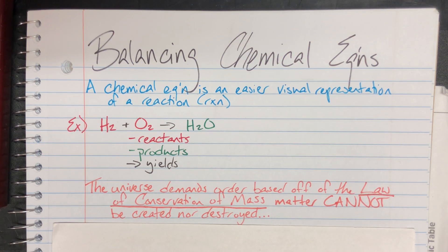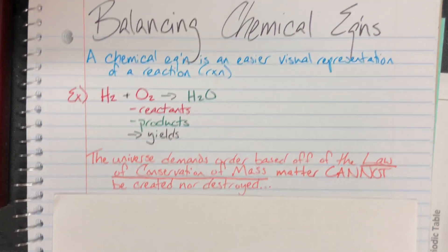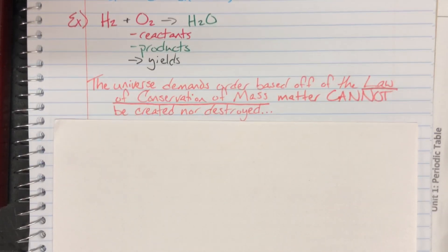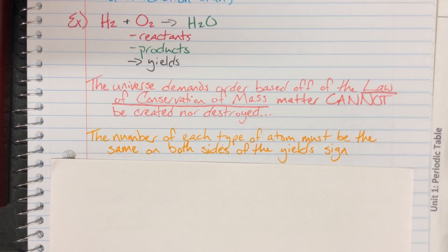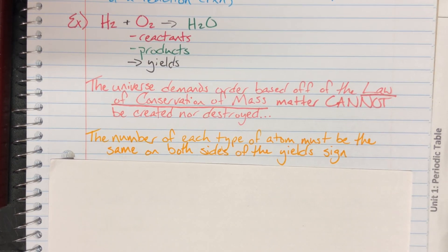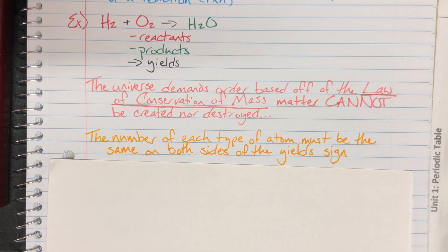Since the law of conservation of mass demands that everything on the left hand side of my arrow has to be the same as on my right hand side when we're talking about masses and the actual elements that are present, I must balance the chemical equation to bring order to the universe. The number of each type of atom must be the same on both sides of that yields sign.